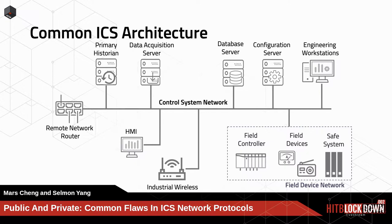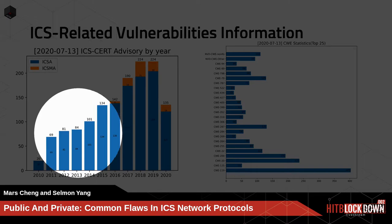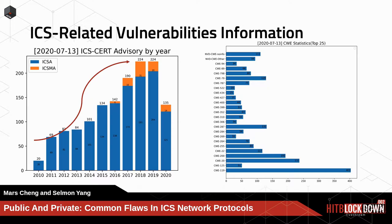Let's take a look at the ICS-CERT serial of ICS security. ICS-CERT is a national agency owned by the United States government which focuses on ICS security issues. The number of advisories is rising year by year. However, seeing only the advisory count doesn't give us an evaluation of severity, because each advisory may include many vulnerabilities. So we use CVSS — the Common Vulnerability Scoring System — to take another look at the same data.